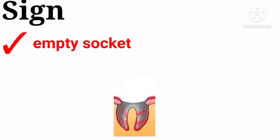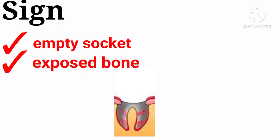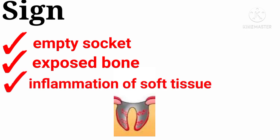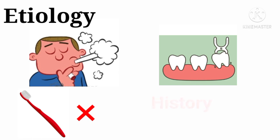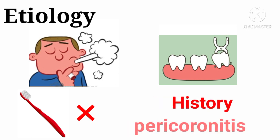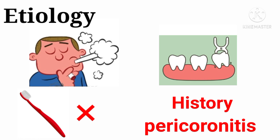Signs include an empty socket that partially or totally lacks a blood clot, exposed bone that is visible and sensitive to touch, inflammation of soft tissue around the socket, and food debris trapped in the socket. It is caused by smoking, traumatic extraction, poor oral hygiene, a patient history of dry sockets, and pre-existing infection such as pericoronitis.